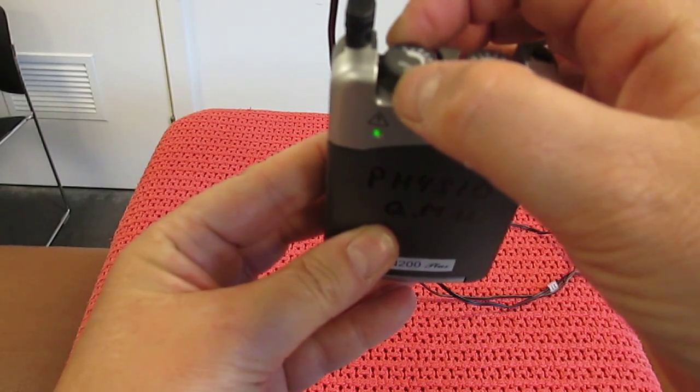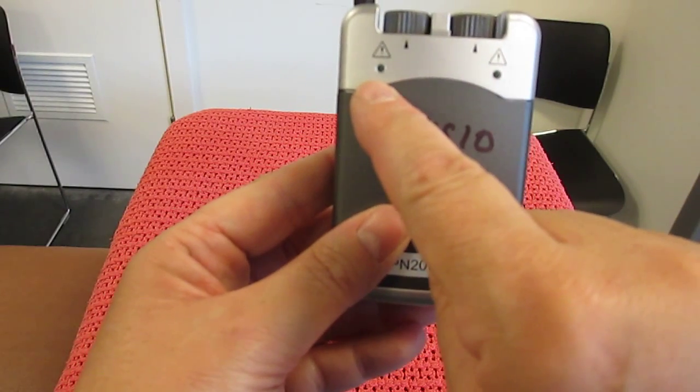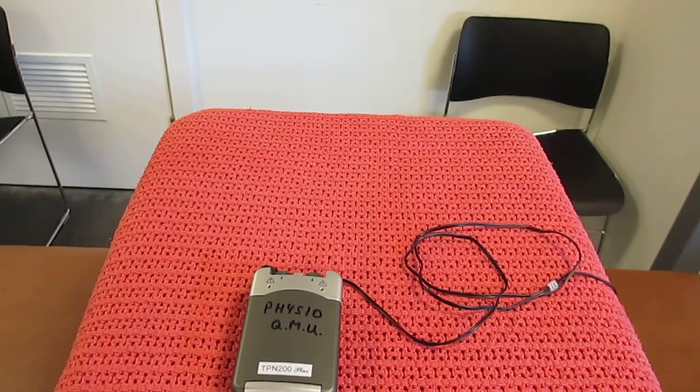turn down slowly and make sure it's clicked off. The light is off, and that means it is now safe to take the electrodes off your patient.